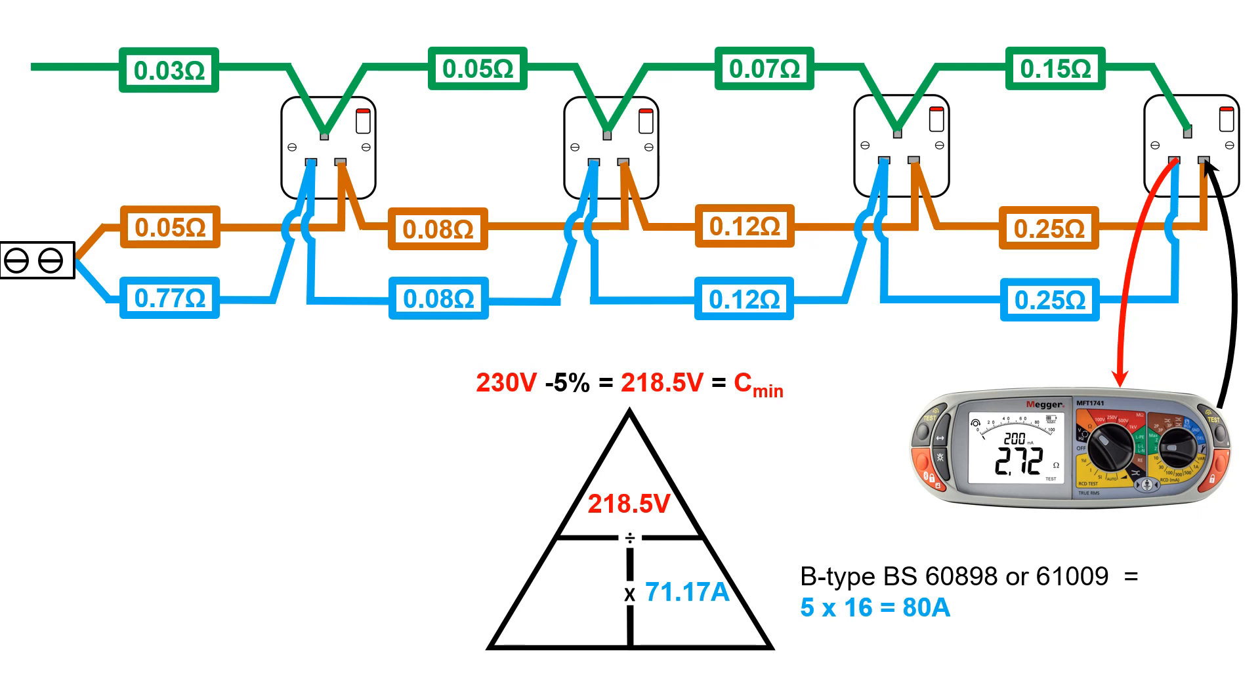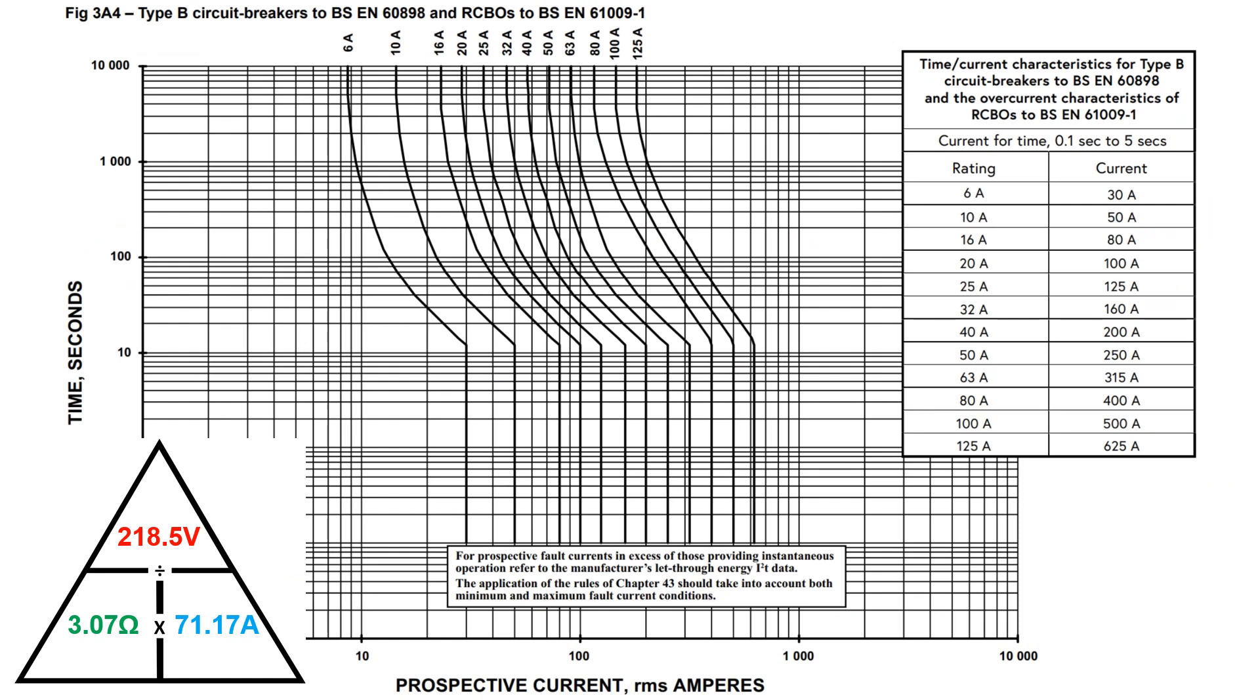However, the untested neutral has a higher resistance, which doesn't meet that value. Once the ZE of 0.35 is added onto the 2.72 ohms measured by the MFT, we get a total circuit resistance of 3.07 ohms, which far exceeds the maximum 2.73 ohms required to operate the circuit-protected device in the required time. This is because the maximum current that can flow is only 71.17 ohms and we needed a current total of 80 ohms. In fact,